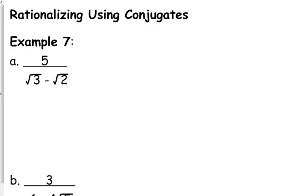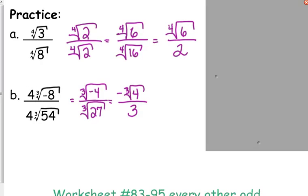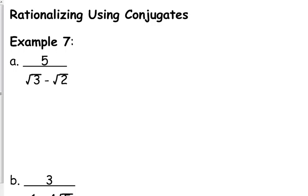If we have something like 5 over the square root of 3 minus the square root of 2, taking it a step beyond what we did yesterday. Just a little reminder: yesterday there was only a single term in the denominator. So what happens if we throw another term in there with a plus or a minus?